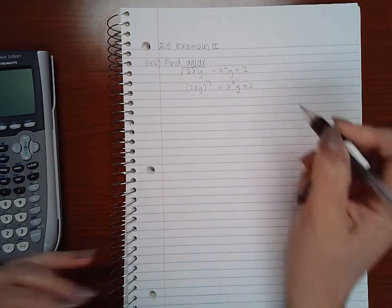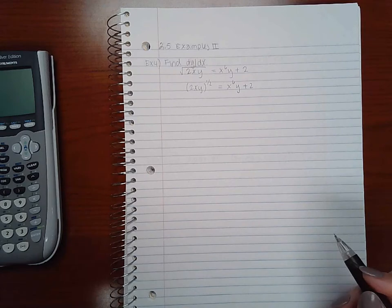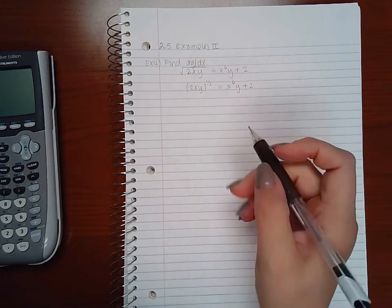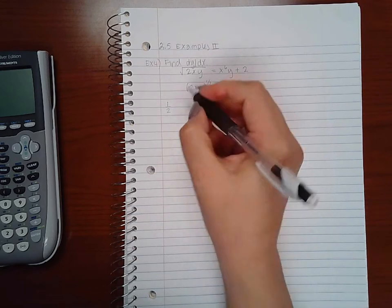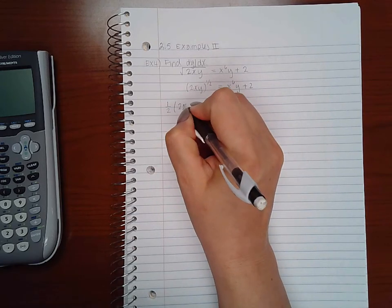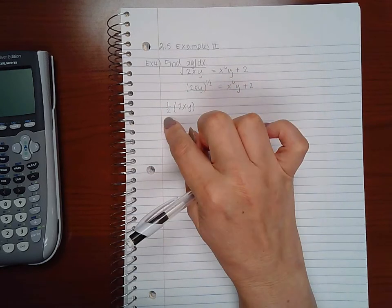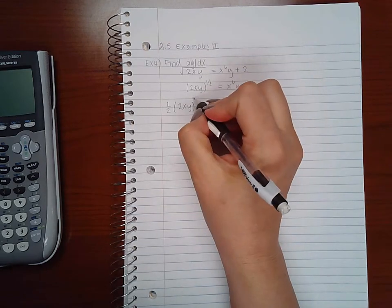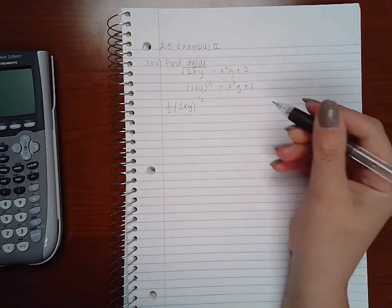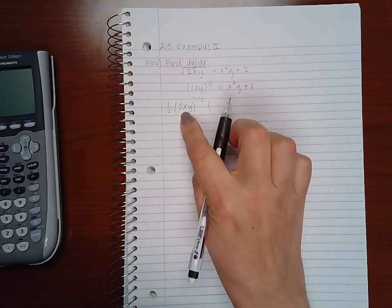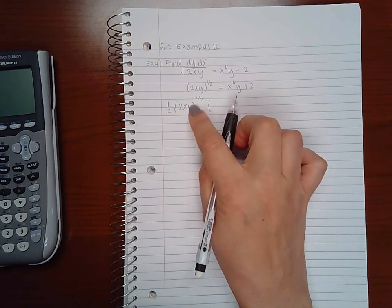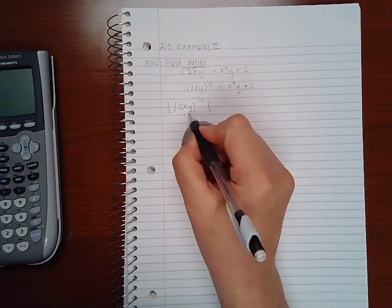And then we need to take the derivative of each term. So when you're taking the derivative of any base with an exponent, you bring down that exponent, keep your base the same, and then decrease your exponent by one. However, because the base is not just an x, we will need to multiply by the derivative of that base and the derivative of this will require us to use product rule.